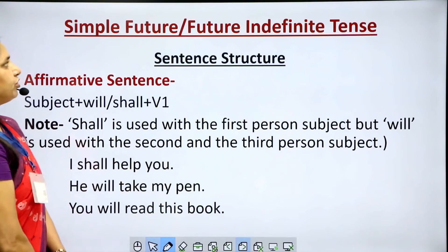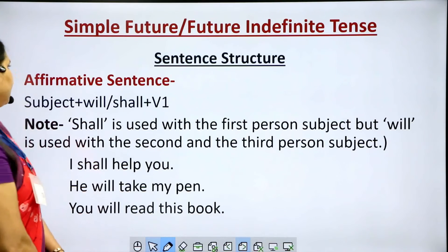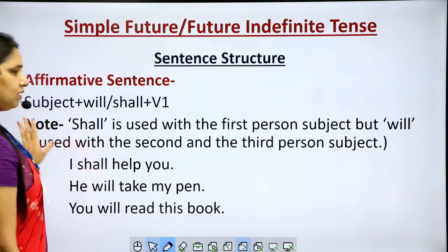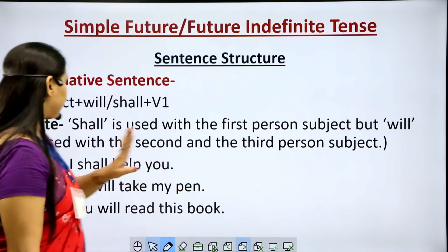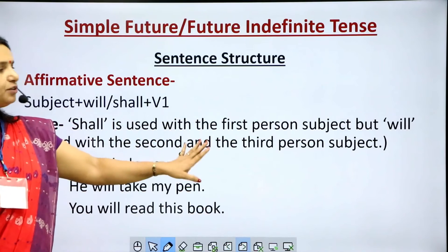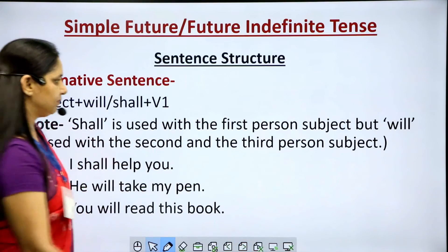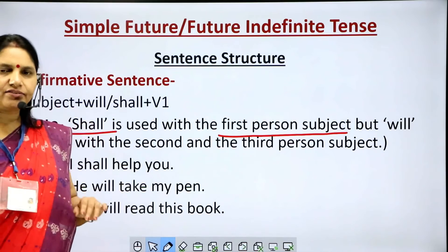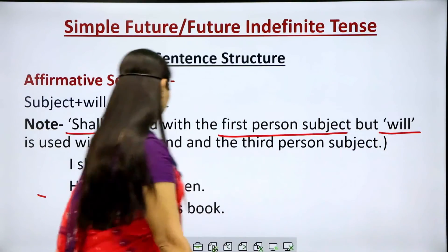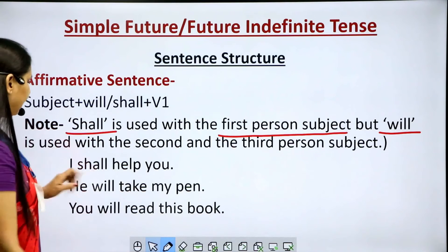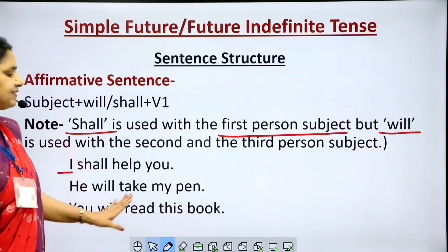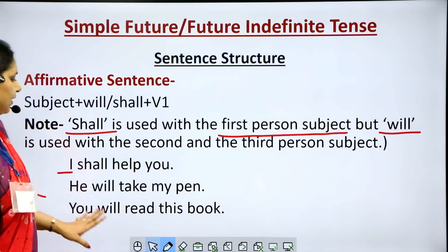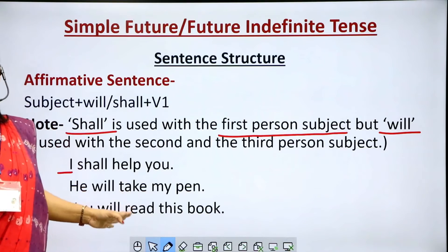Now, simple future, or future indefinite tense. For affirmative sentences, the structure is: subject plus will/shall plus V1. Note that 'shall' is used with first person subjects (I or we), while 'will' is used with second and third person subjects. Examples: 'I shall help you.' — 'I' is first person so 'shall' is used. 'He will take my pen.' — 'he' is third person so 'will' is used. 'You will read this book.' — 'you' is second person, followed by 'will'.